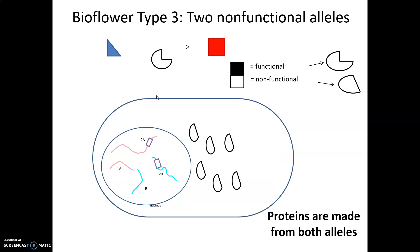In bioflower type 3, both alleles code for non-functional enzymes. So what do we have in the cell? We have only non-functional enzymes, and so that's going to take the blue pigment — but it actually cannot be changed to red pigment. So this flower type will stay blue.